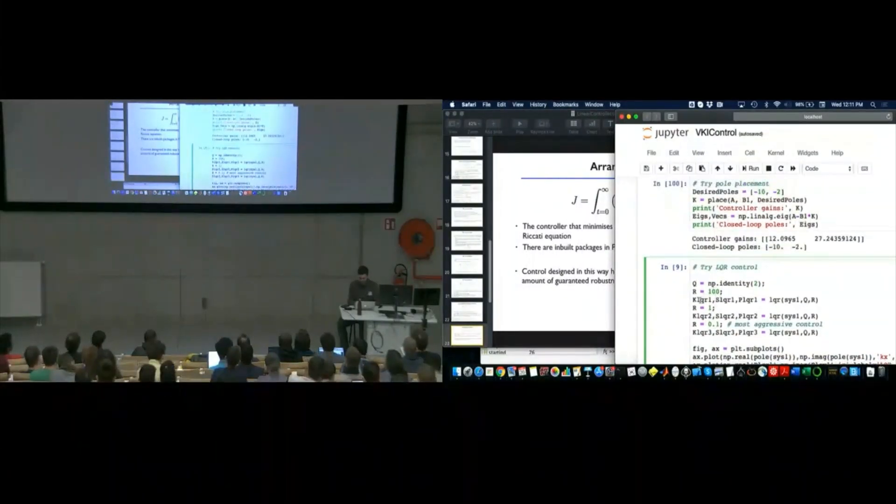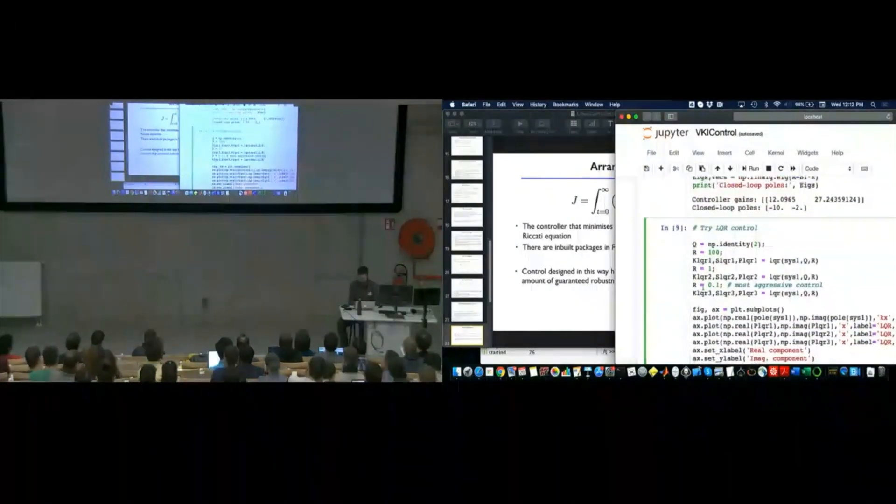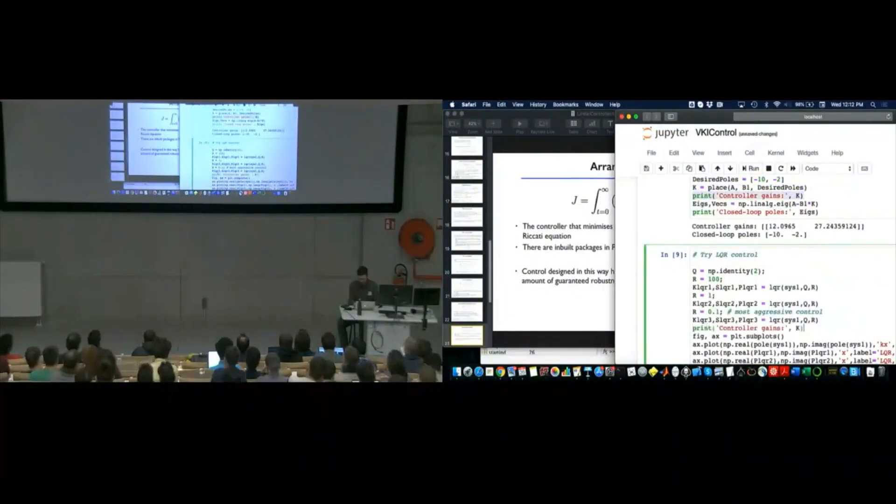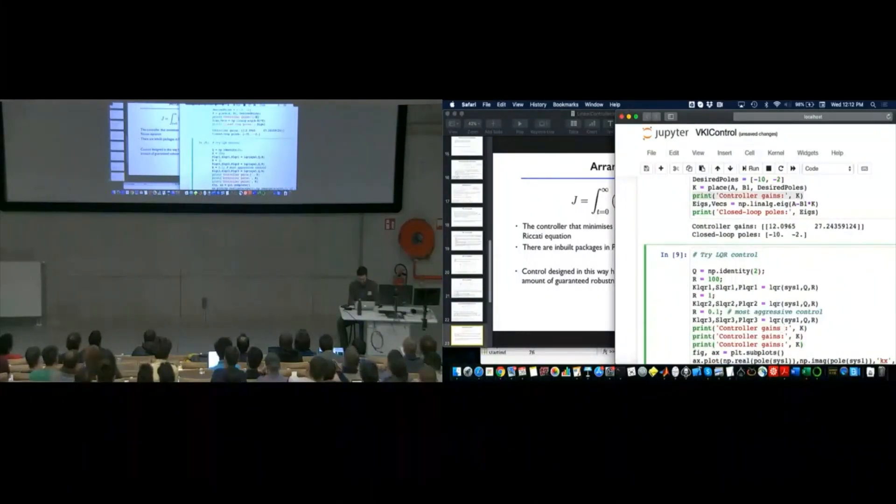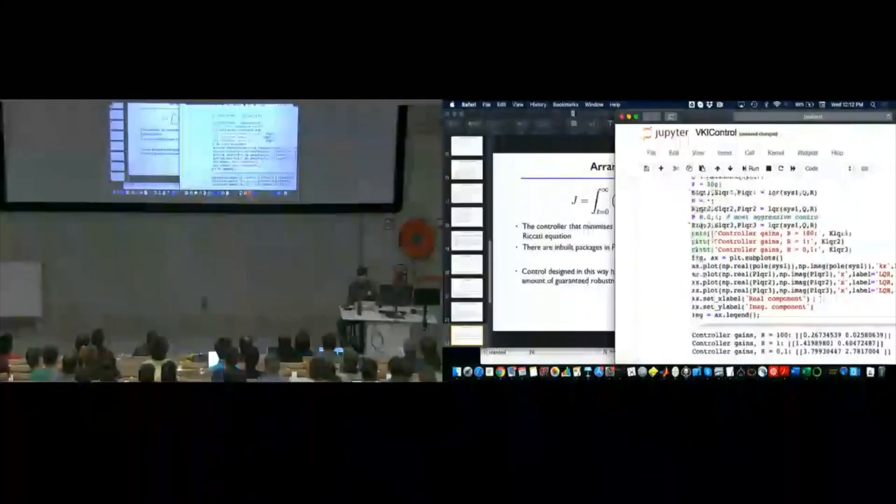Okay. So, again, my controller is given by this KLQR. And actually, if I wanted to look at, I'll say LQR equals 100, R equals 1, R equals 0.1. This should be KLQR1, LQR2, and LQR3. So, I can run this. I get my three different controller gains.